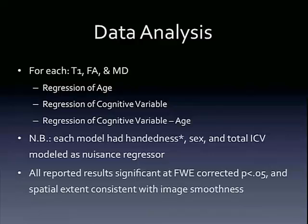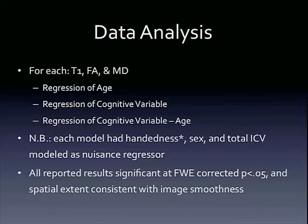All of our data is in the same space, and we can do all kinds of analyses on it. The type of analyses we started with was looking at each of these data sets individually — T1, FA, and MD — and we looked at the regression of age, and the regression of specific cognitive variables. We also looked at the regression of the cognitive variable subtracting out the effect of age to see if there's anything left over. For each model, we modeled handedness, sex, and total intracranial volume as nuisance regressors, except for the very young children who didn't have handedness.